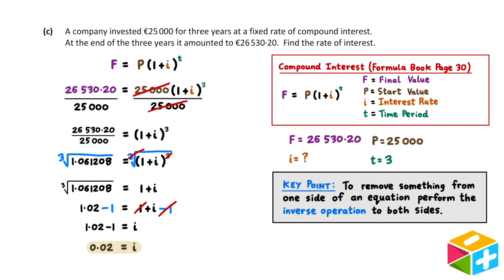So we found the value of i. It's 0.02. Here, i represents an interest rate. And it's conventional to present interest rates in percentage form rather than decimal form. To convert our answer to a percentage, all we have to do is multiply by 100. So our final answer is that i is equal to 2%.